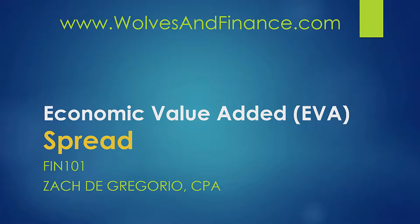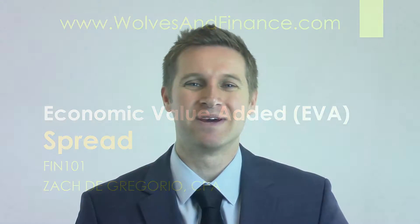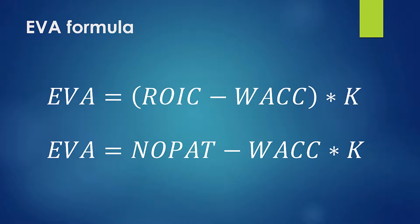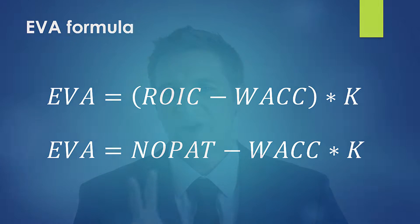In this video, we're going to continue talking about EVA, or Economic Value Added. In the previous video, we mentioned how there are two equations for calculating EVA. Now there are two equations, but each of these equations will give you the same end result — they both equal the same thing. But the reason why there are two equations is that each equation tells you something a little bit different about your business.